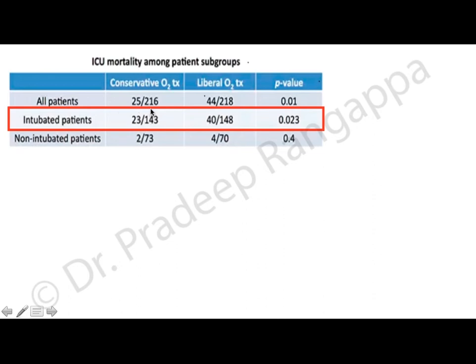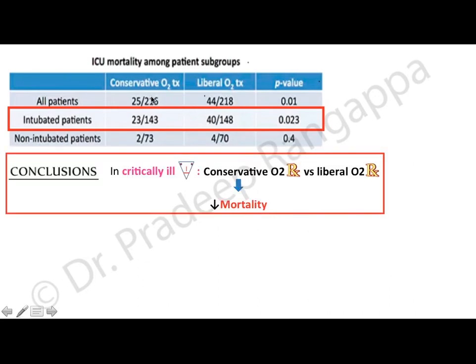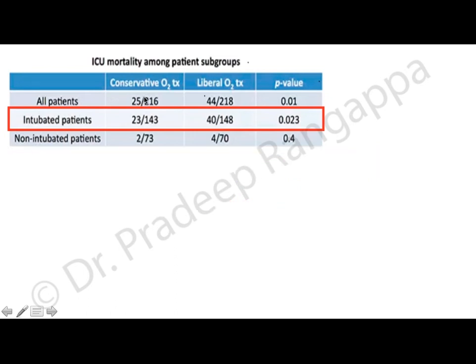However, in non-intubated patients there was no statistically significant mortality difference between liberal and conservative groups. This highlights that in intubated patients we should be all the more worried about not maintaining higher oxygenation. The conclusion of the Oxygen-ICU study was that liberal oxygen increases mortality and conservative oxygenation reduces mortality in critically ill patients.